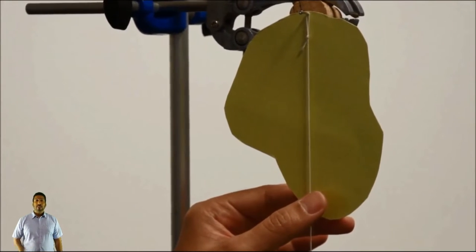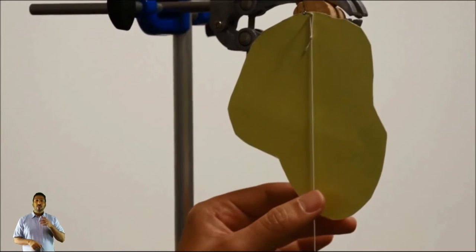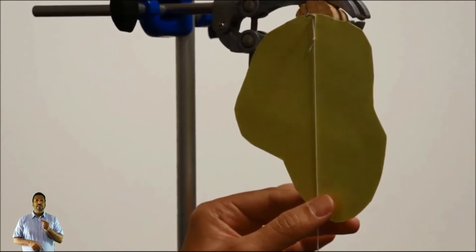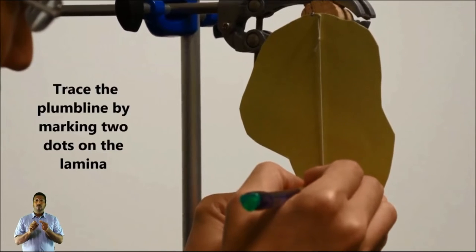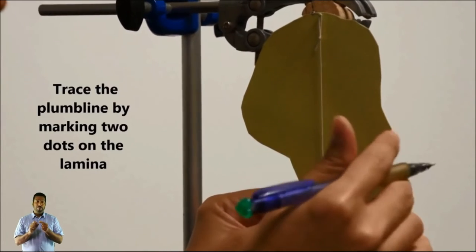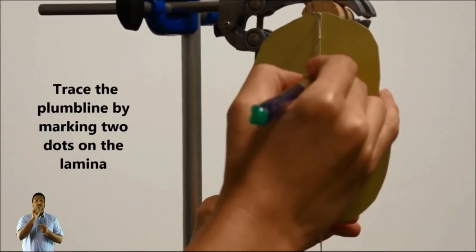You let the laminar stop swinging and then you very carefully hold the string and the laminar and then you trace the plumb line by marking two dots on the laminar. You mark one at the bottom and you mark one at the top.